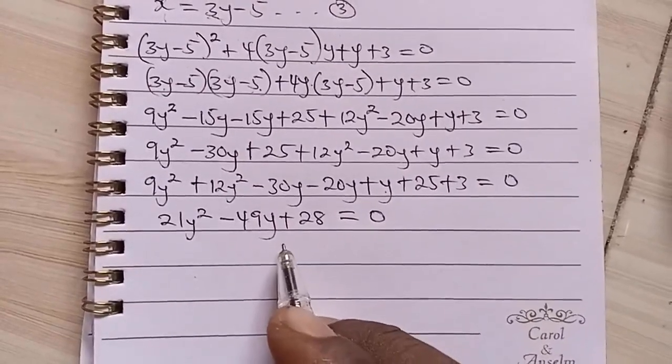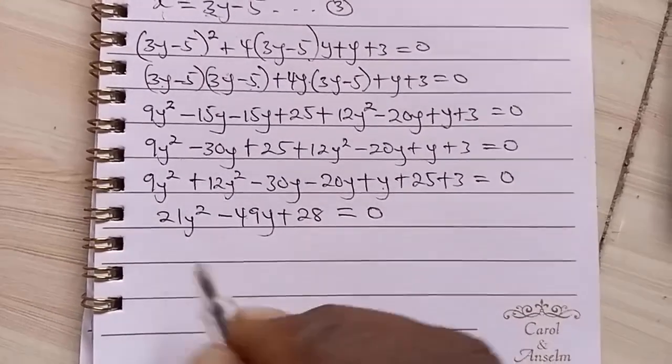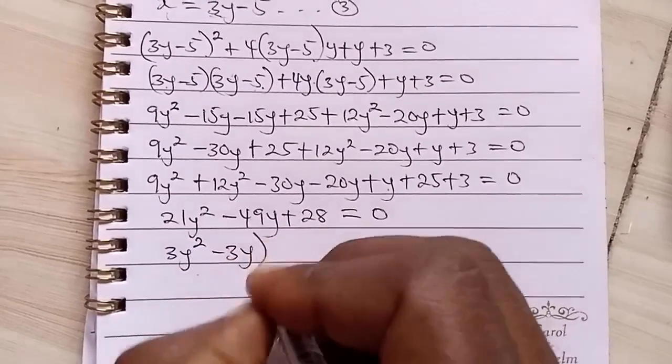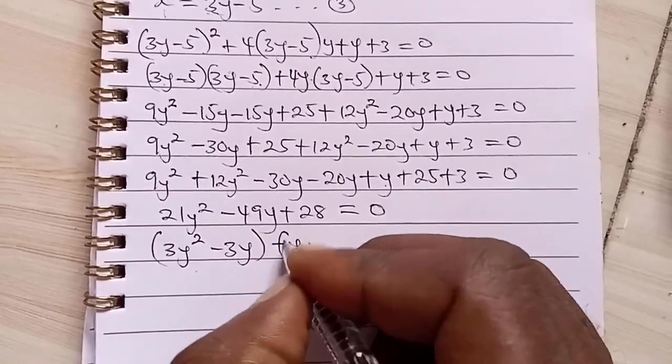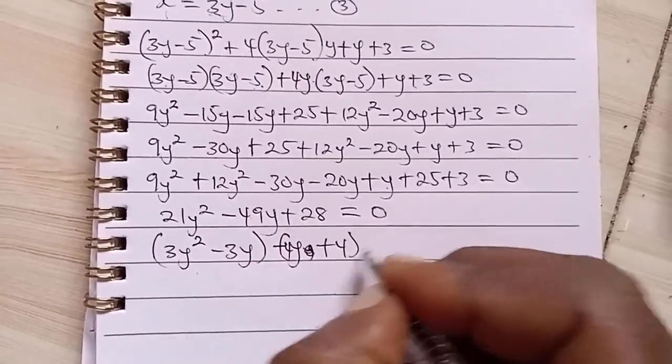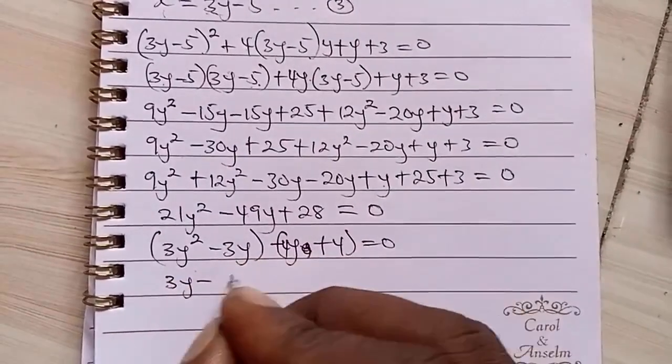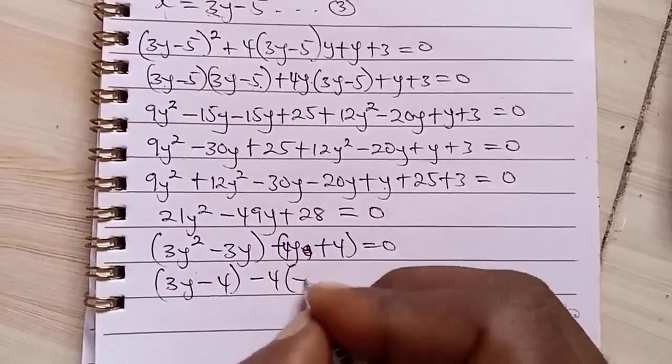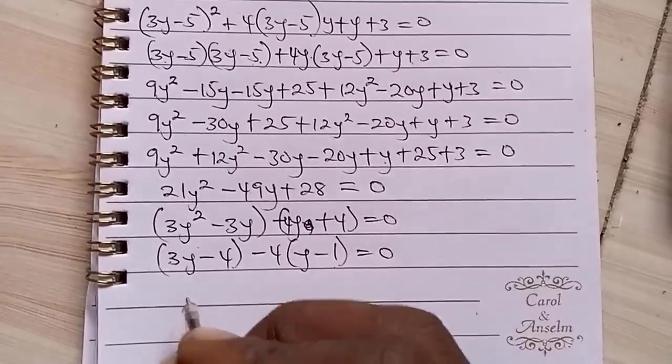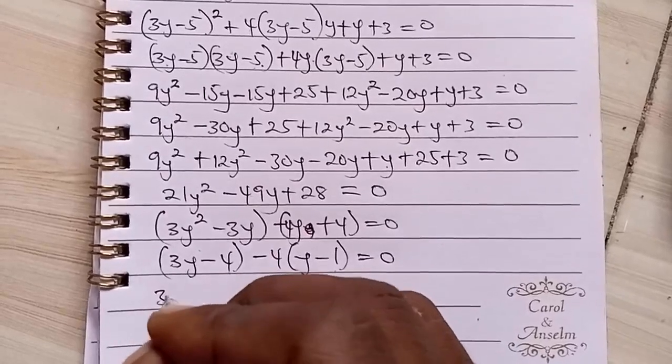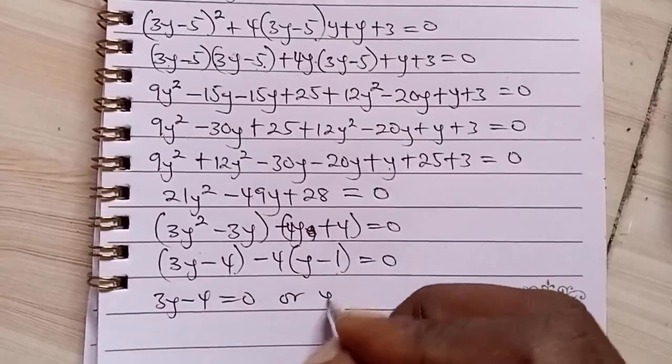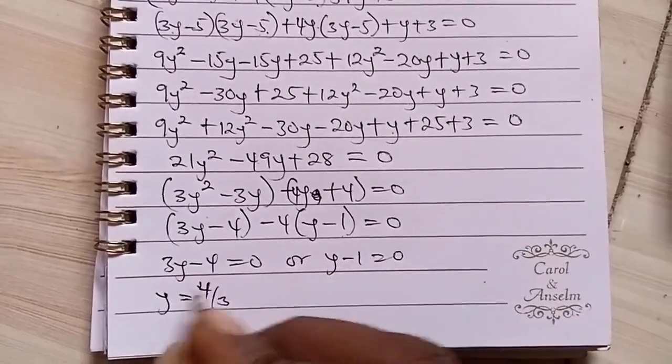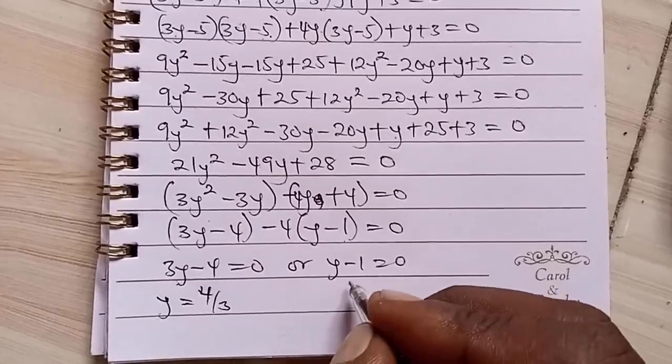Now we can solve this quadratically. We can factorize it. We can see 3Y squared minus 3Y, then we have minus 4Y, 4Y plus 4 equals 0. Then here we have 3Y minus 4, then minus 4 is common, Y minus 1 equals 0. Here we have that is either that 3Y minus 4 equals 0 or that Y minus 1 equals 0. What that means is that Y is 4 over 3. From here, Y is 4 over 3. If we make Y subject of the formula, Y equals 1.